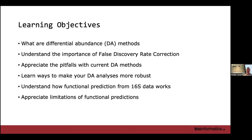Learning objectives for today: what are differential abundance methods, the importance of applying false discovery rate correction, appreciating the pitfalls in microbiome application of differential abundance methods, ways to address those issues, and then we'll talk about PICRUSt — how you can predict function from 16S data and importantly some of the limitations around that.